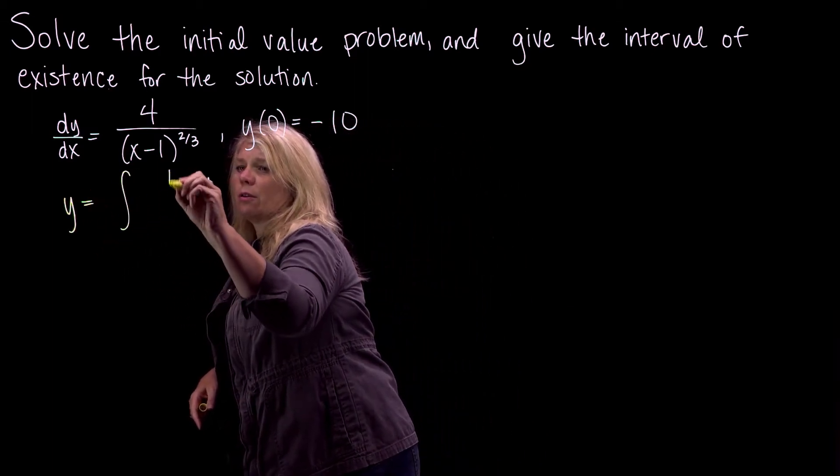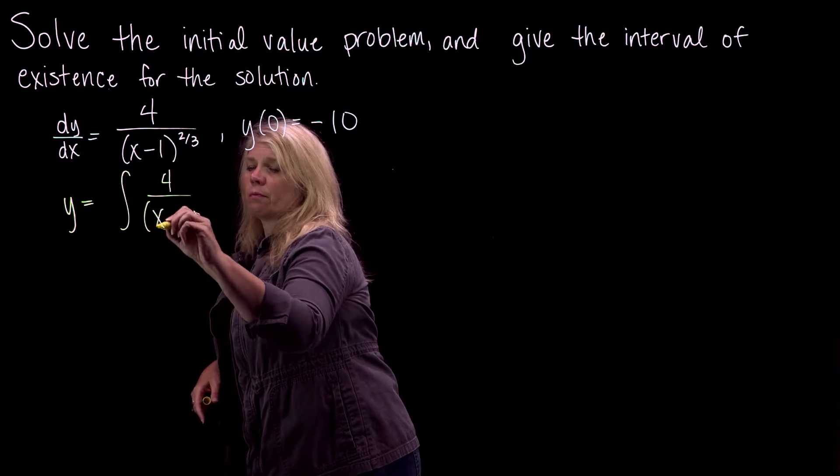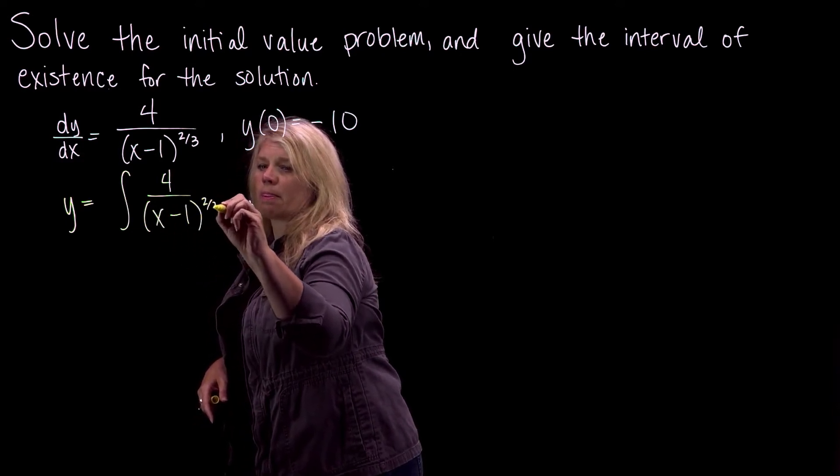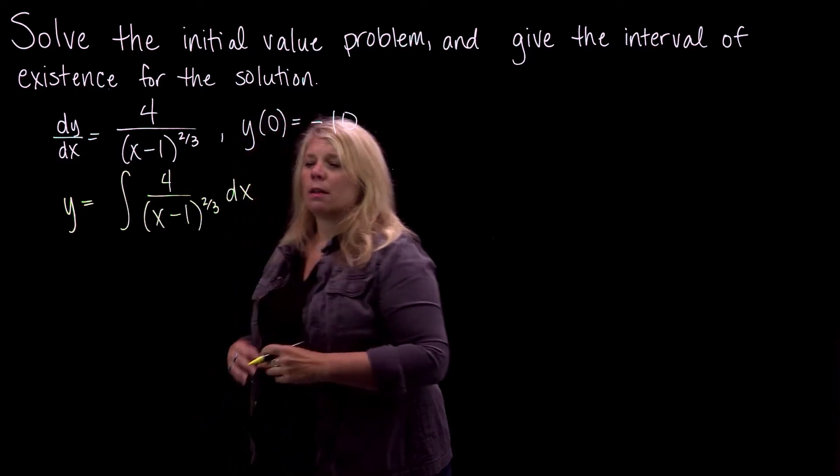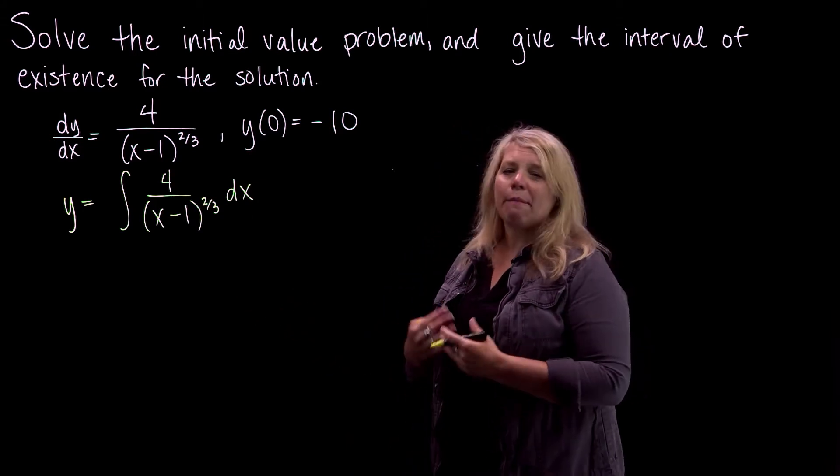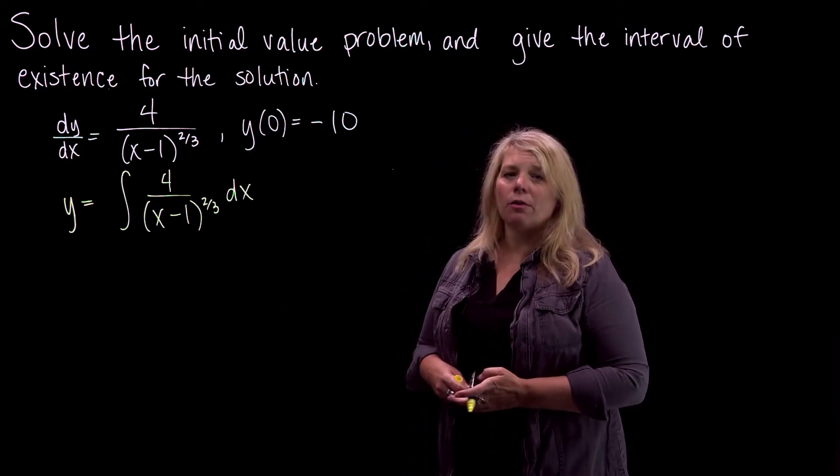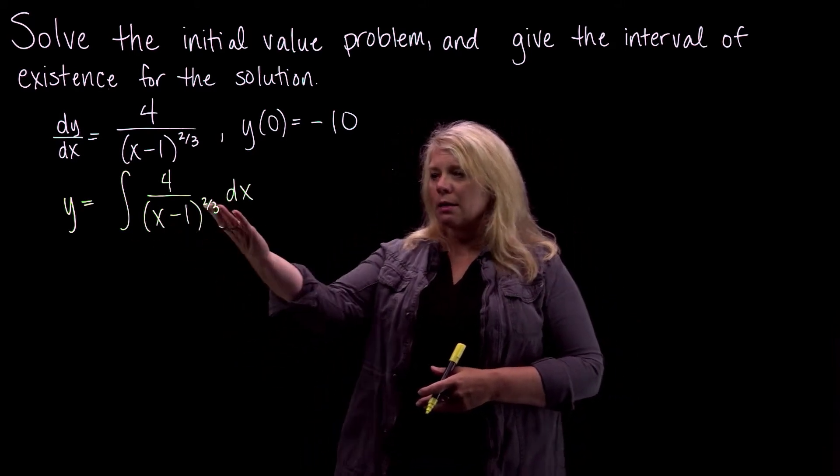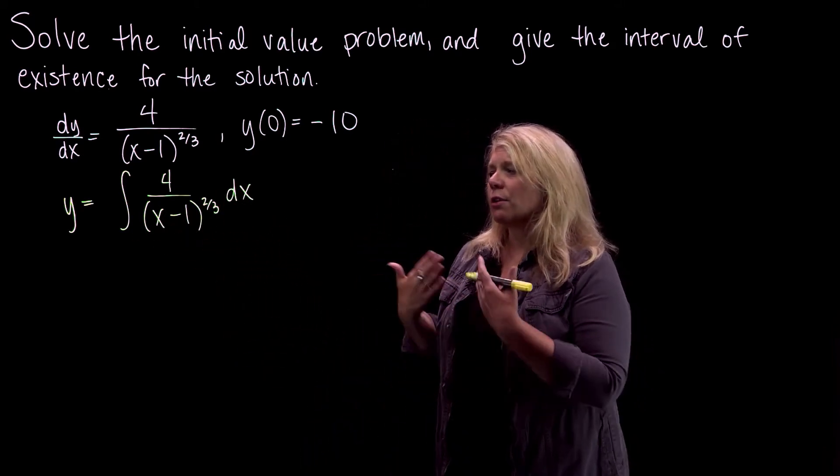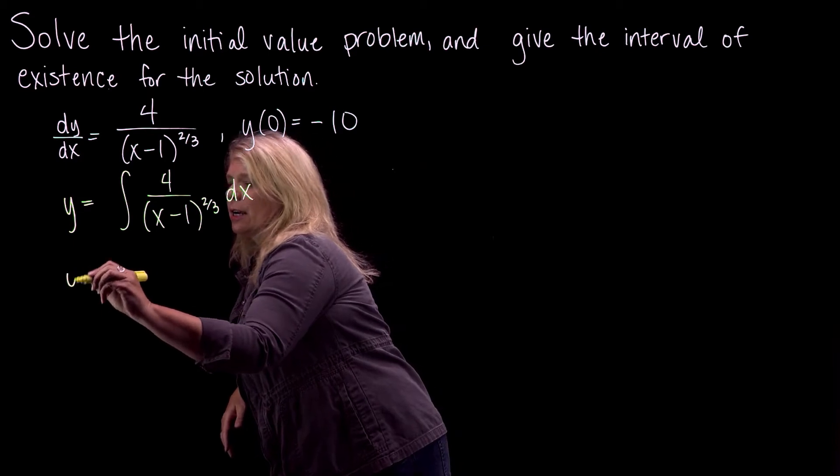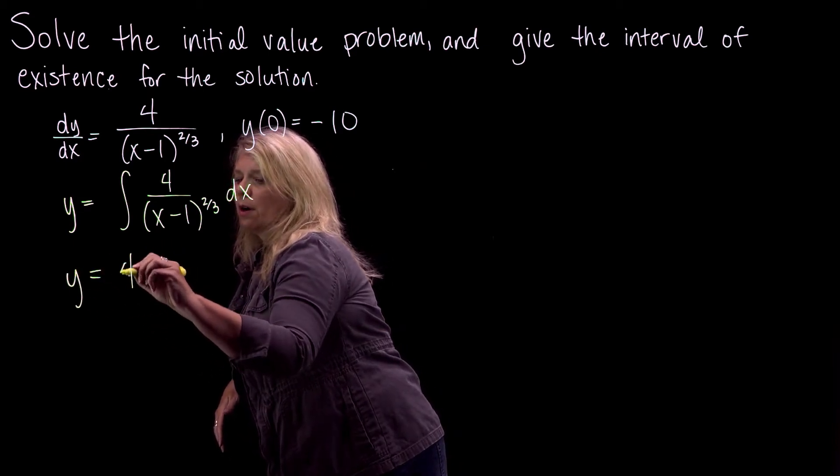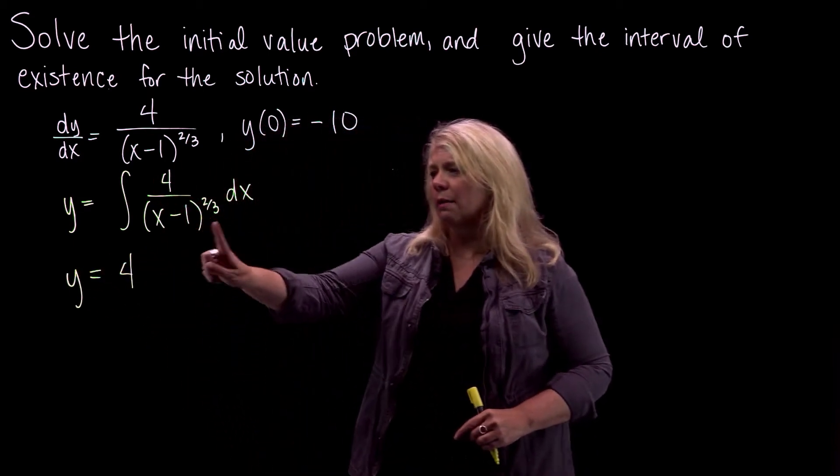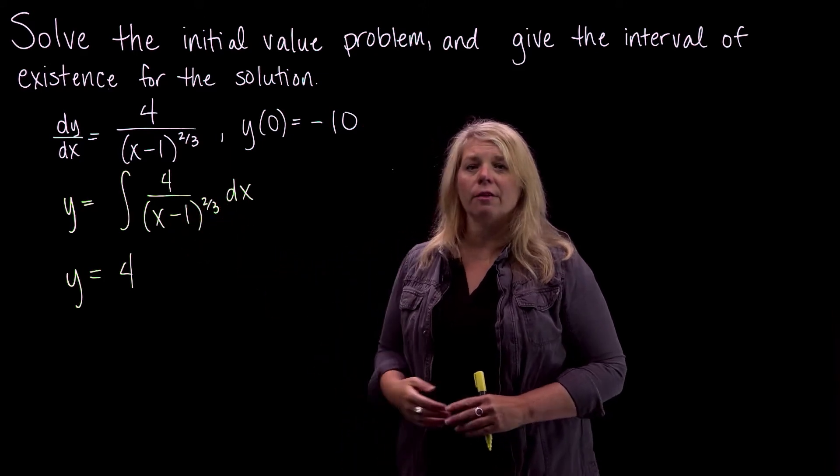So y will be the integral of this. There's a little u-substitution that happens here at this point. Probably you can do that u-substitution in your head. u equals x minus 1, du is equal to dx. And so you just do the integration here. So the 4 will come along, and then I would think about this as u to the negative 2/3.